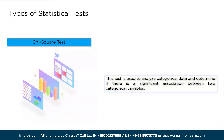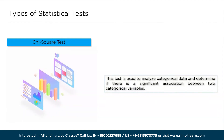The chi-square test is commonly used in research areas such as social sciences, market research, and genetics to analyze data and examine the independence between two or more variables.